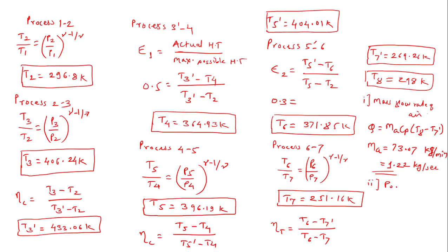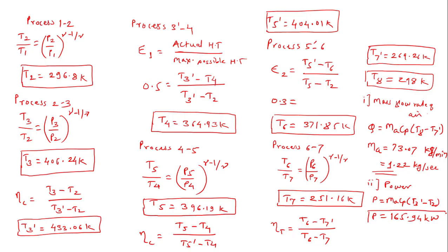Second, the power. The formula is: Power equals m_a times c_p times (T3-dash minus T2), which is the work done across the compressor. Substituting the mass in kg/second and the temperature difference, the power comes out to be 165.94 kilowatts.